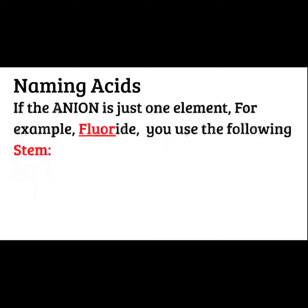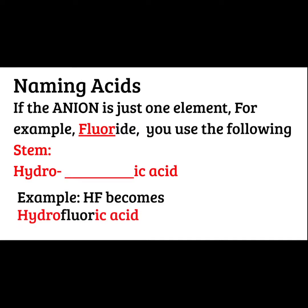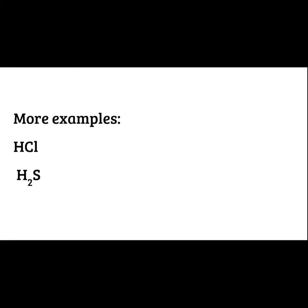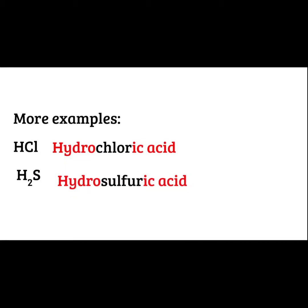For naming acids, if the anion is one single element — so if it's not polyatomic — like fluorine or fluoride, we use the following rule: we put the prefix hydro, then we use the root word of the element and add -ic, and add the word acid. So for fluoride, if that's attached to a hydrogen, it would be hydrofluoric acid. You're only adding the prefix hydro if it's a single element. So HCl would be hydrochloric acid, and H2S would be hydrosulfuric acid. You're just plugging in that root word and adding acid at the end.